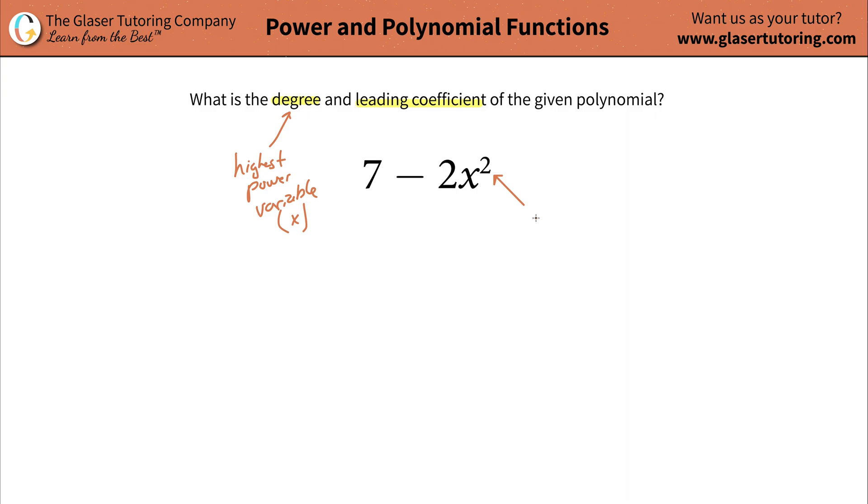And therefore, the highest power available is 2. And that would mean that it is a second degree polynomial.